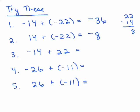Negative 26 plus negative 11: they're both negatives, so the answer is negative — add those together and you have a lot of negatives. And the last one, you're adding a positive and a negative, so the positives outweigh, and you subtract to get the answer.